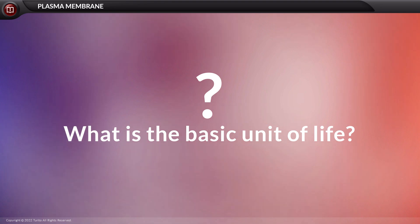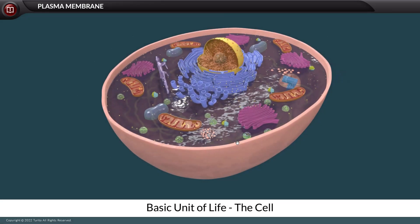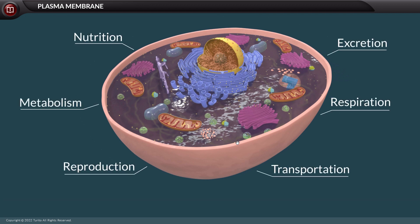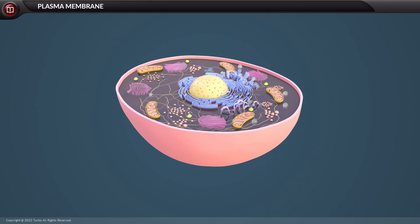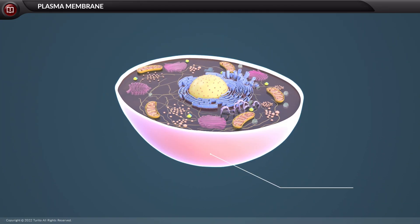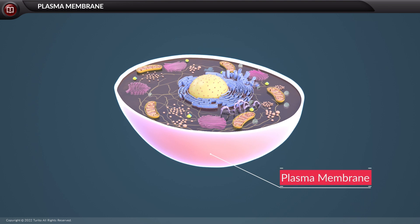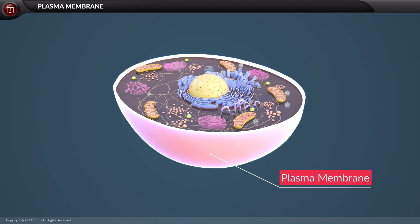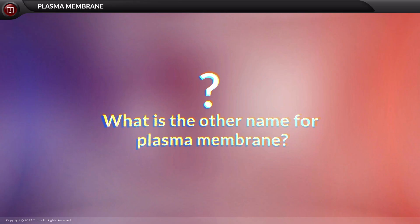What is the basic unit of life? The cell is the basic unit of life. A cell can be defined as a limited space entity that performs metabolic functions. This limitation is due to the presence of a membrane called the plasma membrane. Let us quickly understand the nature and structure of the plasma membrane.